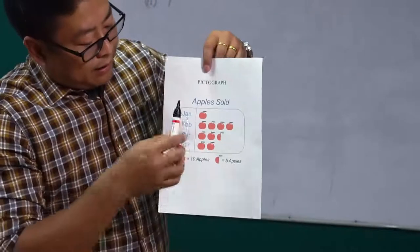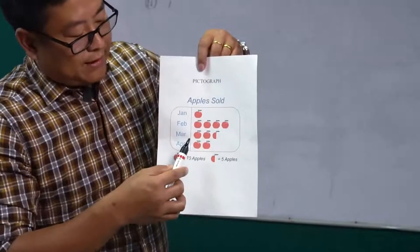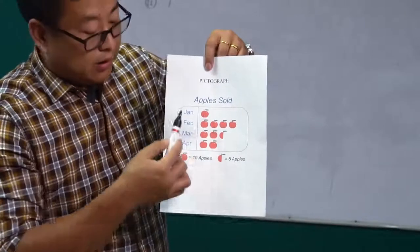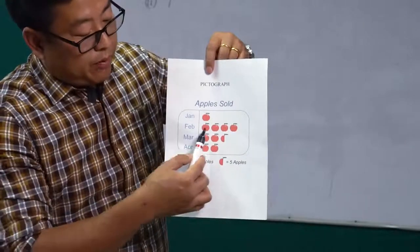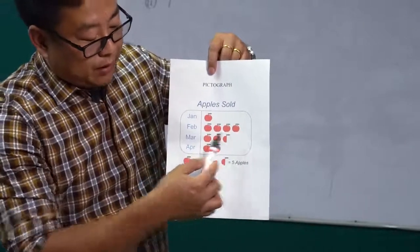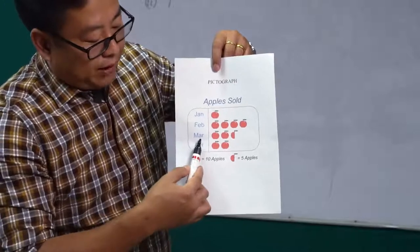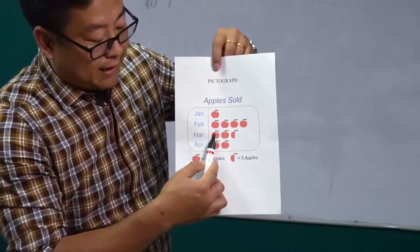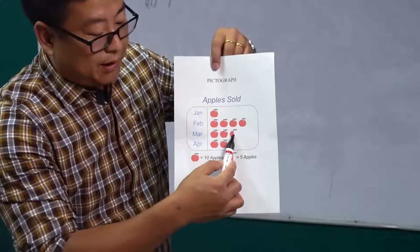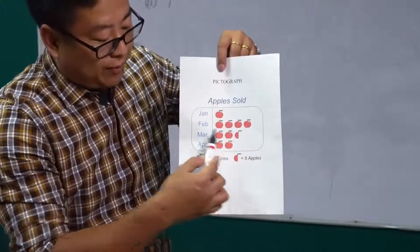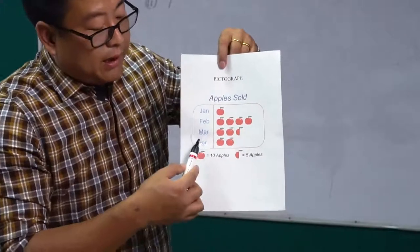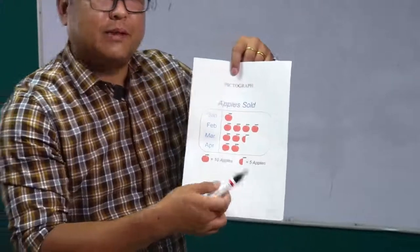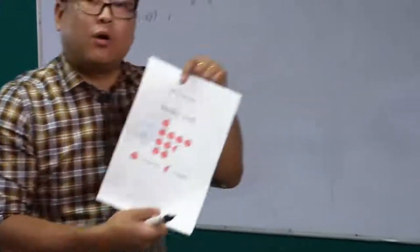In this pictograph, we can understand that in January 10 apples are sold, in February 40 apples, in March — look carefully — we have two apples and a half, that means 10, 20, and five: 25 apples in March. In April, we have 20 apples. So this is all about pictograph.